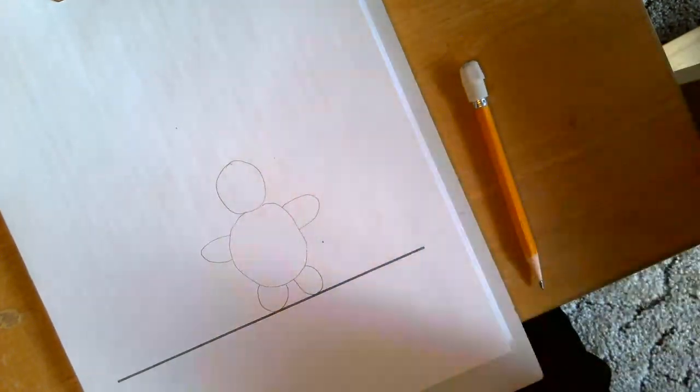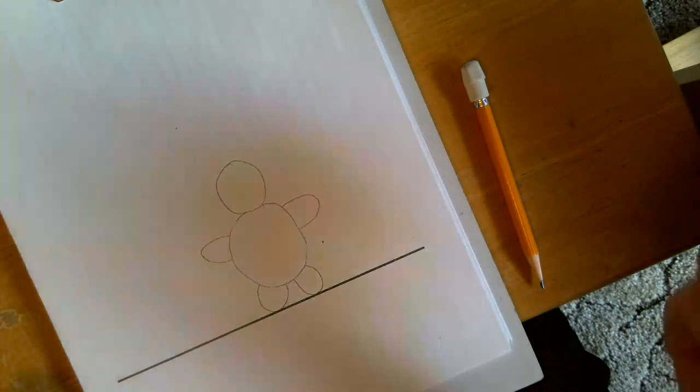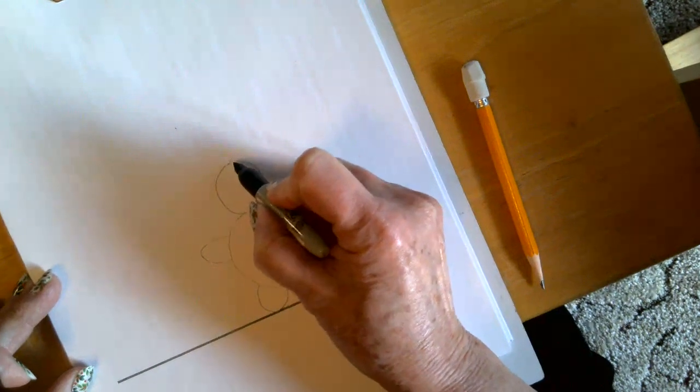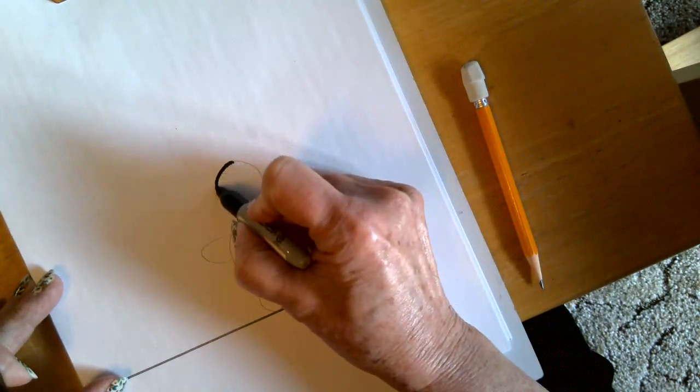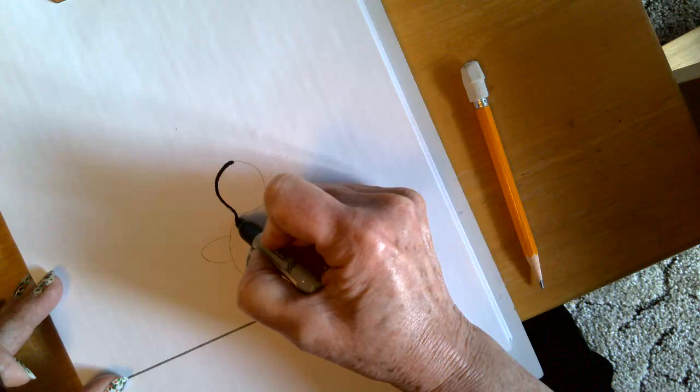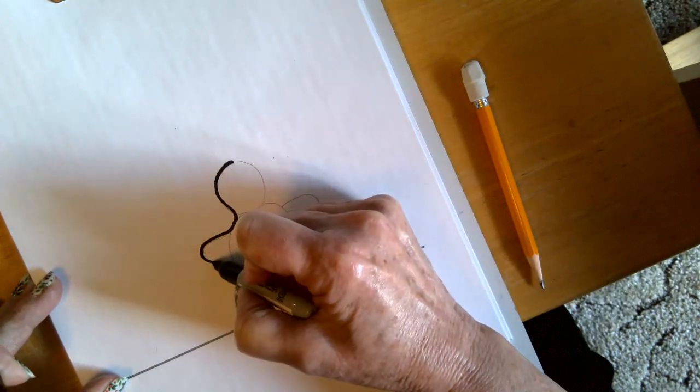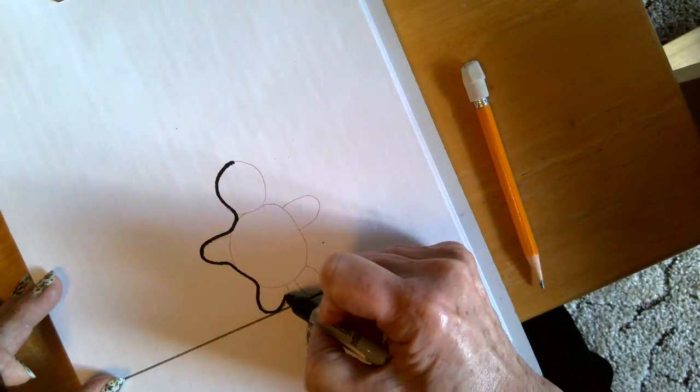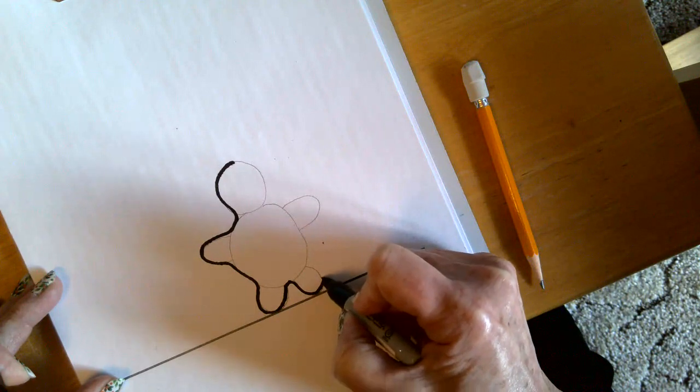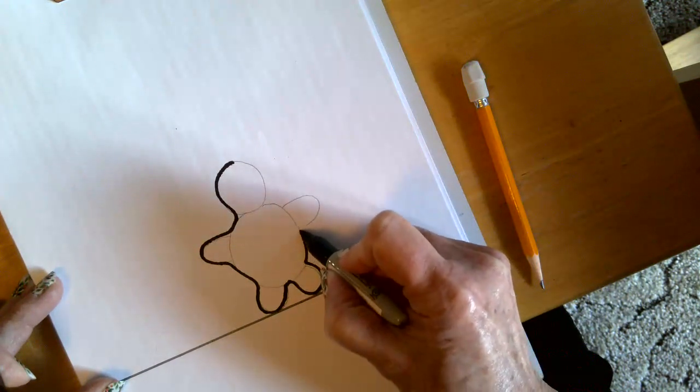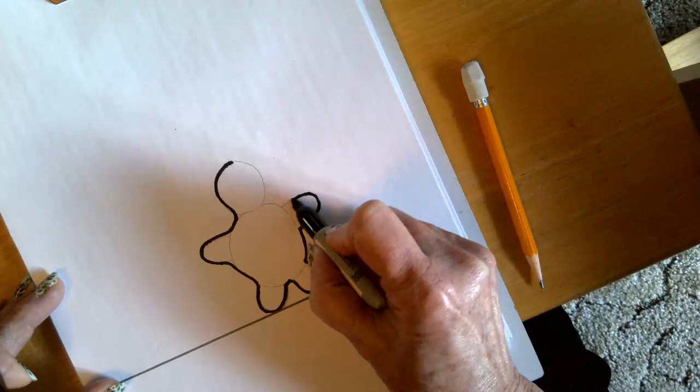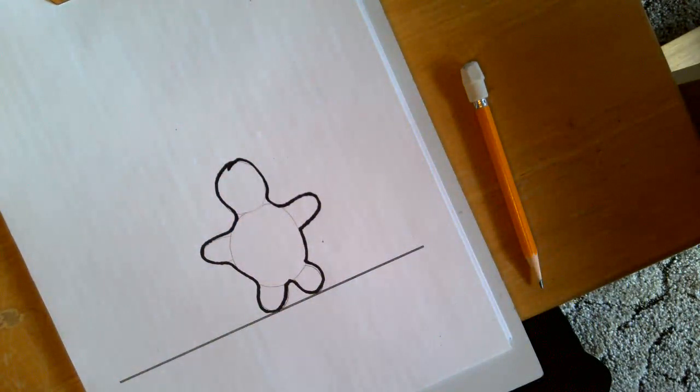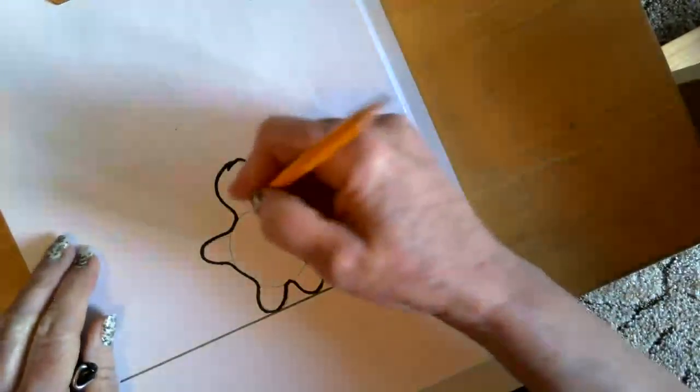Now I want my gingerbread man to stand out so I'm going to use my dark marker and just go around the lines that I want to stay there. And then I can erase the lines I don't want there.